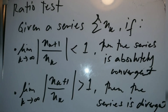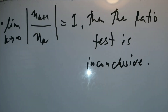For the last topic, the ratio test: given a series summation u_k, if the limit of |u_{k+1}/u_k| as k approaches infinity is less than 1, the series is absolutely convergent. If the limit is greater than 1, the series is divergent. If the limit equals 1, the ratio test is inconclusive.